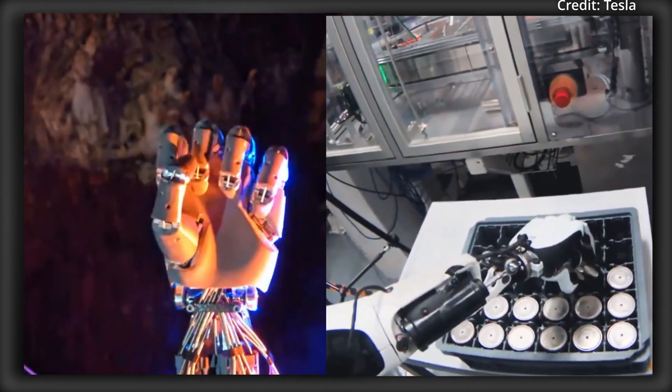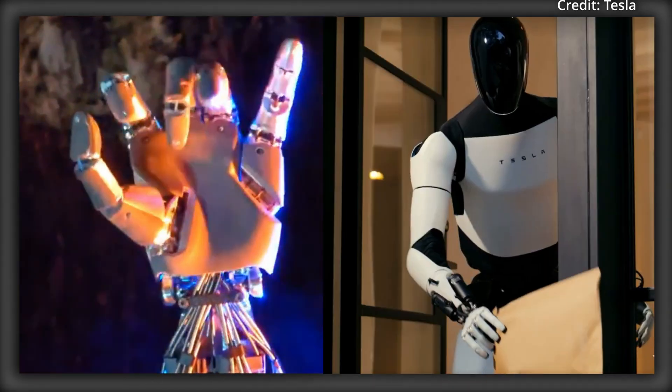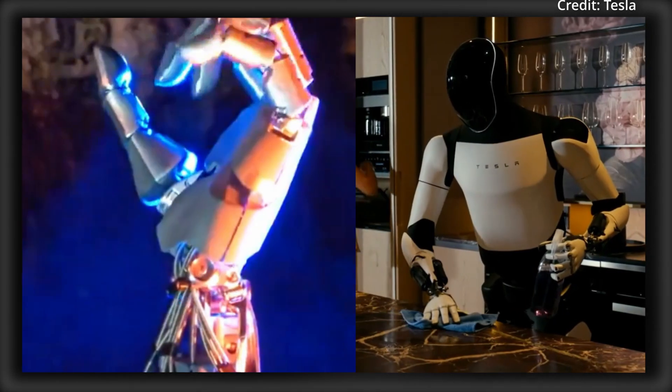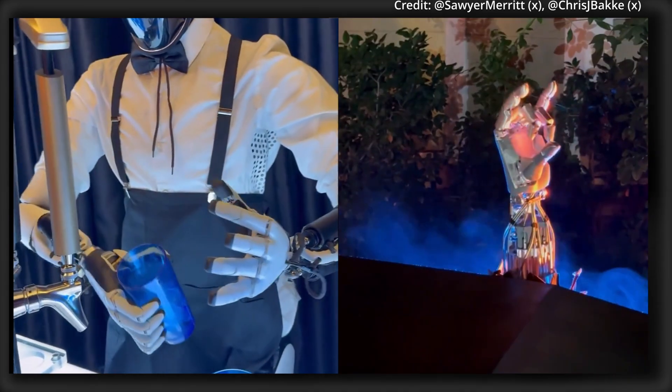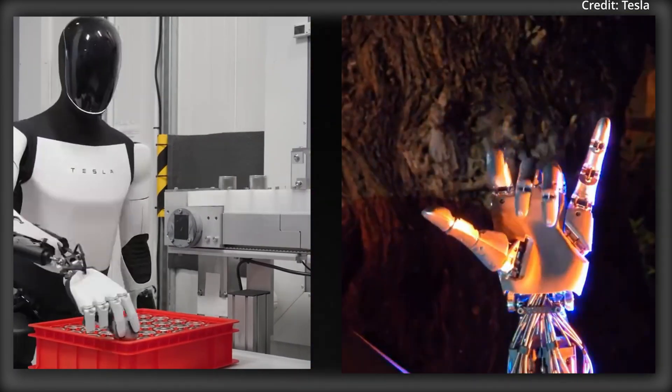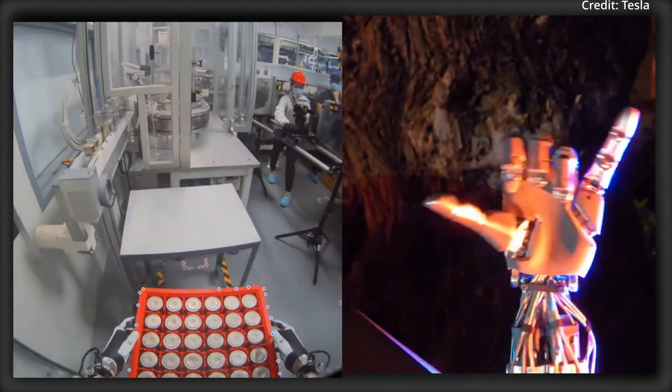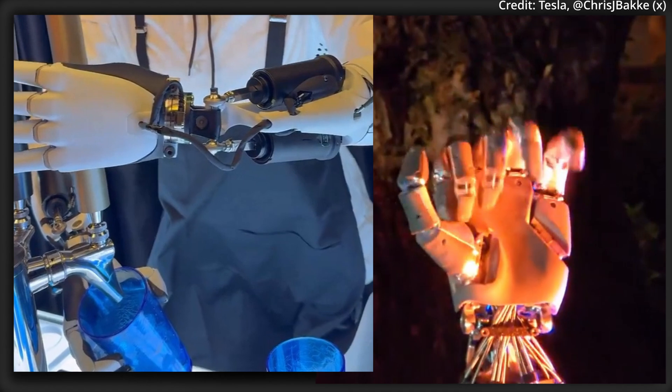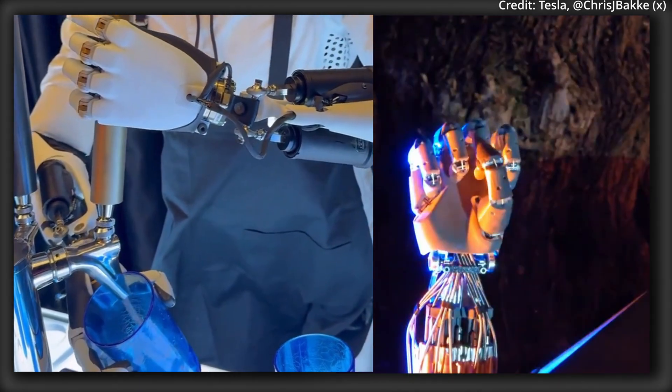And to make them as human-like as possible, Tesla's design incorporates actuators that are primarily located in the forearm, allowing for fingers of varying lengths. This configuration, which even includes a shorter pinky, dramatically enhances overall dexterity, particularly in tasks requiring fine force control.